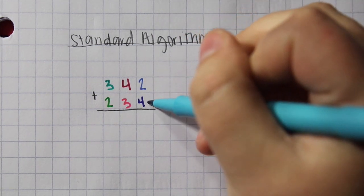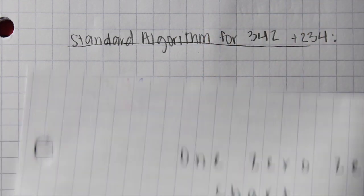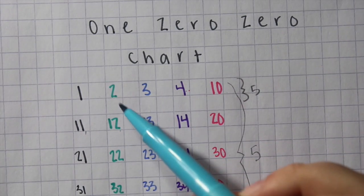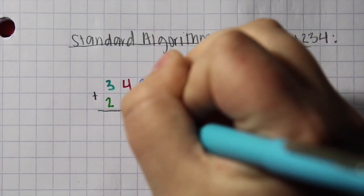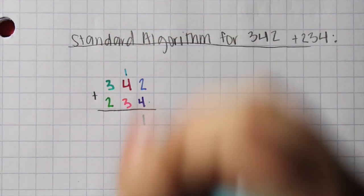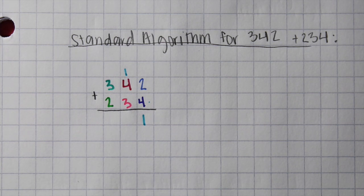So 2 plus 4, we're going to bring out our 100 chart and count 4 up from 2. So it goes up to 11. I'm going to write our 1 there and carry the 1 from that 10's value to the 10's column.